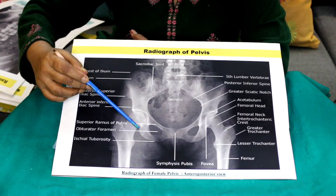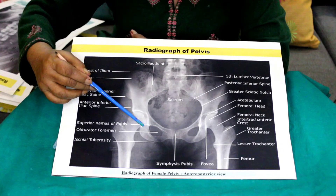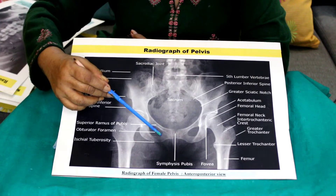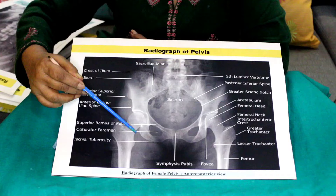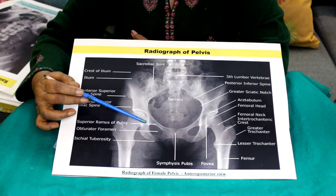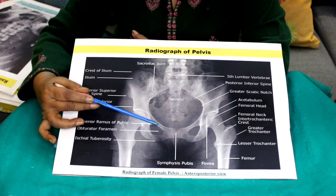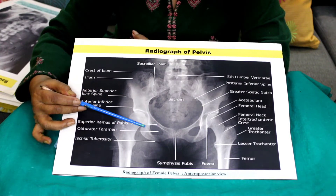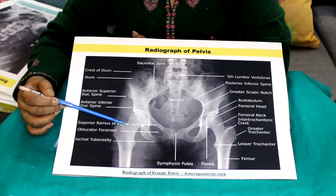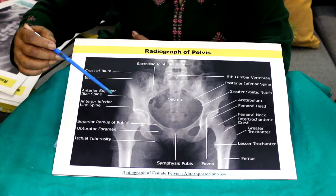The lower border of the neck forms an oblique arcuate curved line with the obturator foramen of the hip bone. This is the obturator foramen, and this line is known as Shenton's line. Shenton's line is important because in a fracture of the neck of the femur, this line is not smooth — there will be distortion of Shenton's line.